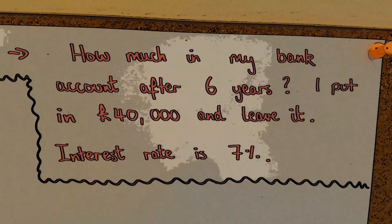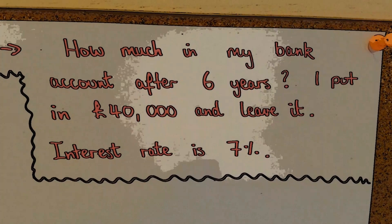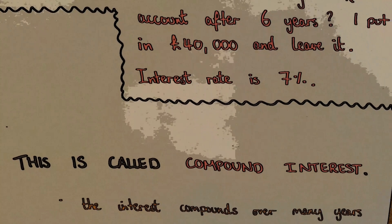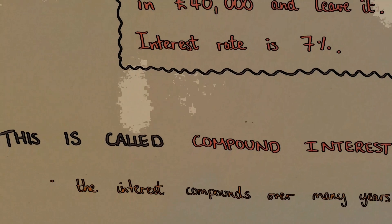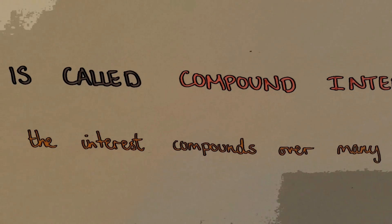Okay, so we have a question here: How much will there be in my bank account after six years if I put forty thousand pounds in and leave it there? The interest rate I'm paid is seven percent per year. For those of you who don't know, an interest rate is what a bank pays you for saving with them.